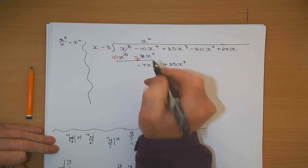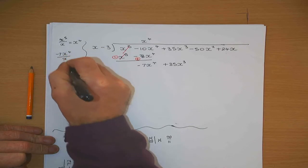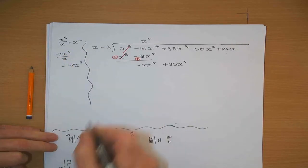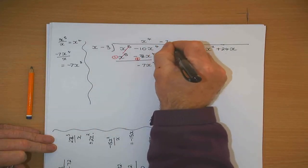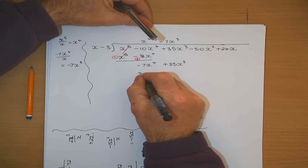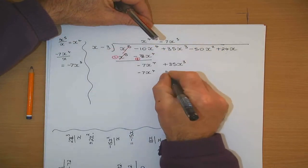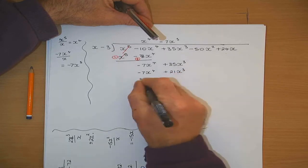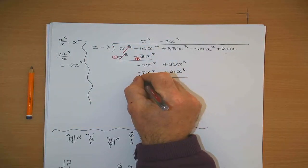I divide x into that. Minus 7x to the 4 divided by x gives minus 7x cubed. That goes in minus 7x cubed. Minus 7x squared by x gives minus 7x to the 4. Minus 7 by that gives plus 21x cubed — because minus times minus gives plus. Change the sign on the lower line and add.